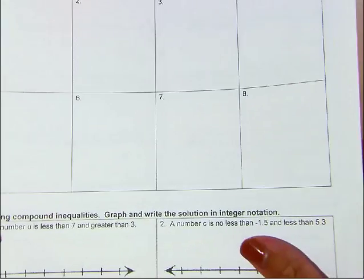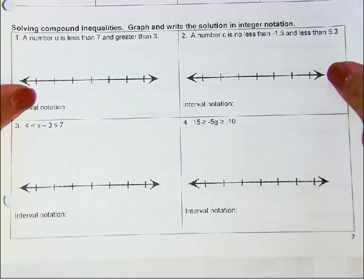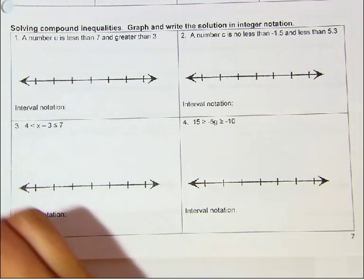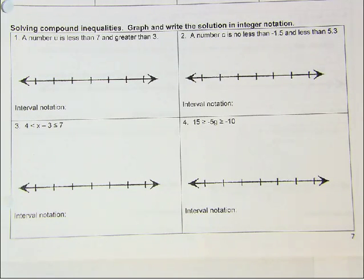If you turn to 2.4, it has this at the top, but we're going to start down here and fill out down here. So 2.4 is all about solving these compound inequalities. You need to solve them, graph them, and then write it in interval notation.